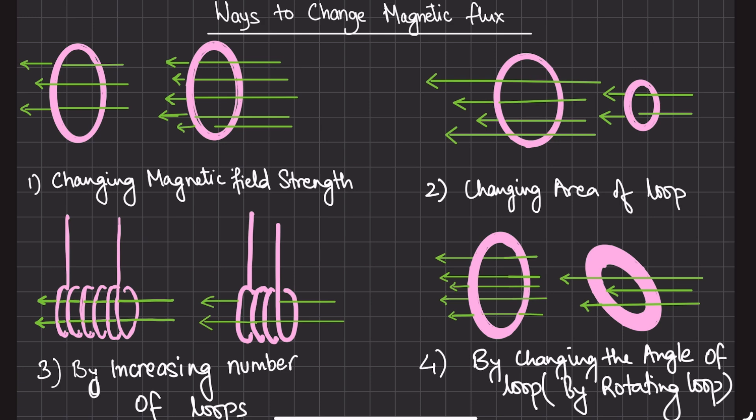There are several ways we can change the magnetic flux in a loop. One way is by changing the strength of the magnetic field. Another method is by adjusting the area the magnetic field is passing through. We can also increase the number of loops in the coil, which has a big impact. And lastly, we can rotate the loop to change its angle relative to the magnetic field.